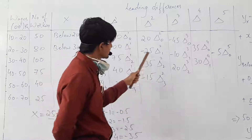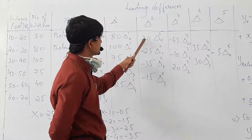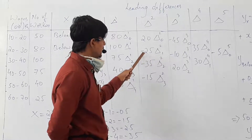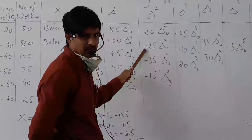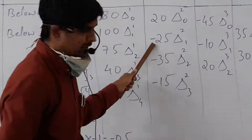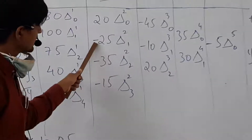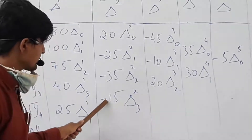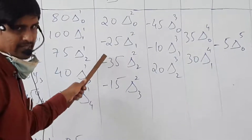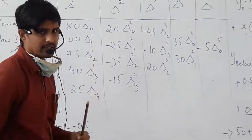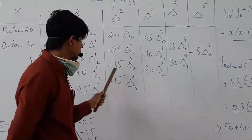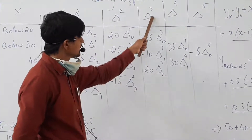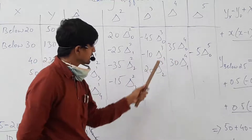Third leading difference: minus 25 minus 20 = minus 45. Minus 35 minus (minus 25) = minus 35 plus 25 = minus 10. Minus 15 minus (minus 35) = minus 15 plus 35 = 20. So this is the third leading difference. Next, fourth leading difference.